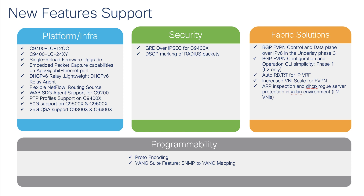This release introduces both hardware and software capabilities across the areas of Catalyst 9000 switching platforms, security, EVPN fabric solution, and programmability. Here is the key feature summary for the 17.12 release.